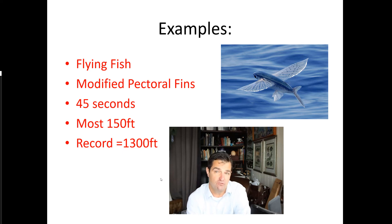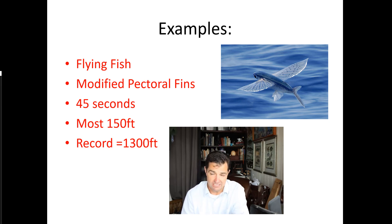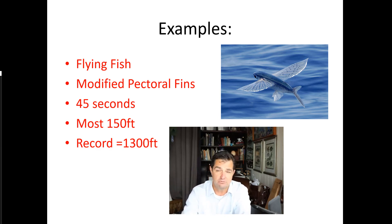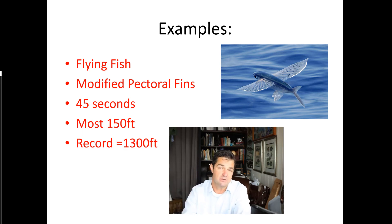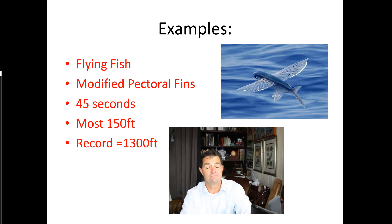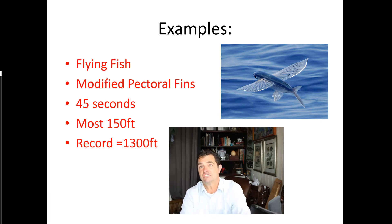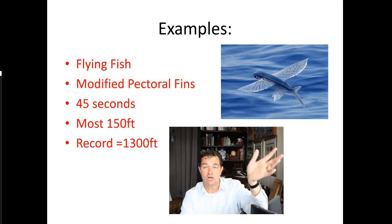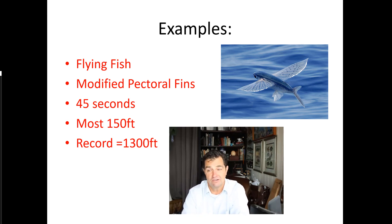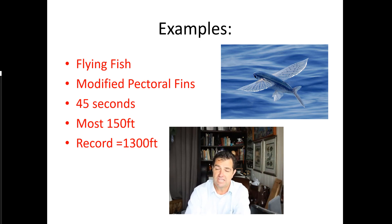First, flying fish — we occasionally see these off our coast. They have modified pectoral fins: they swim very fast, leap out of the water, extend those fins, and glide for up to about 45 seconds. Most travel 100–150 feet, but records show some gliding up to 1,300 feet. They use this behavior to escape predators — once they leave the water, a pursuing fish can't follow.